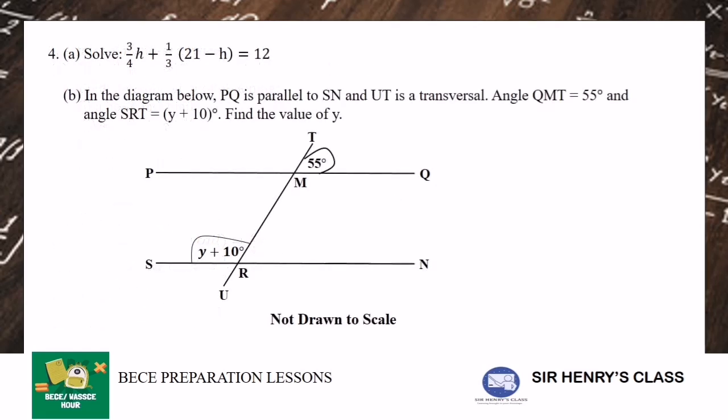Then solve 3/4x plus 1/3 multiplying 21 minus x equal to 12. This is a linear equation.